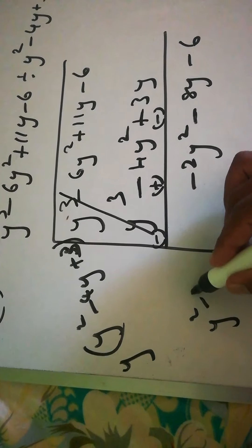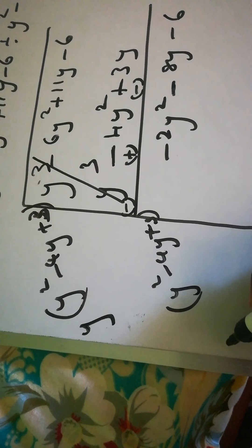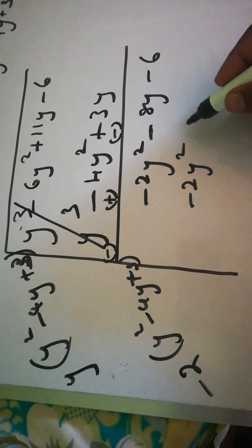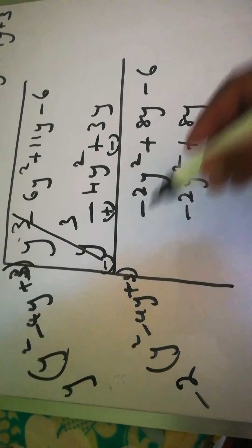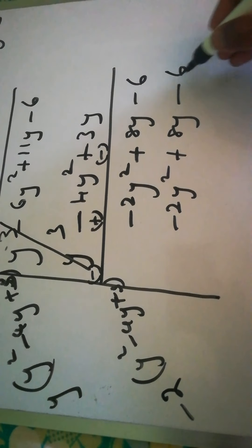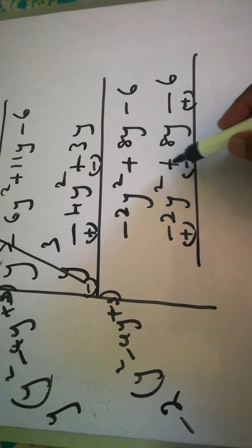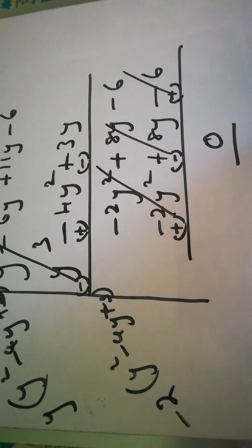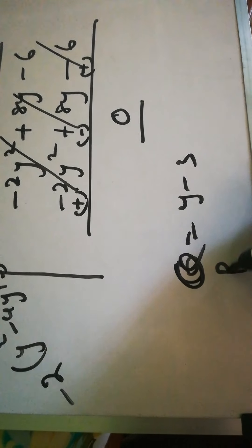Bring down y² - 4y + 3 again. To get -2y², multiply by -2: -2 times y² is -2y², and minus times minus 4y is +8y. Plus times minus gives -26. Change the sign — everything cancels and the remainder is 0. Therefore the quotient is y - 2 and the remainder is 0.